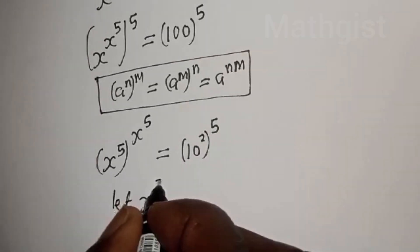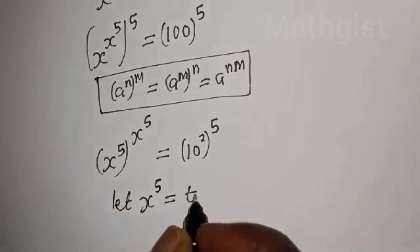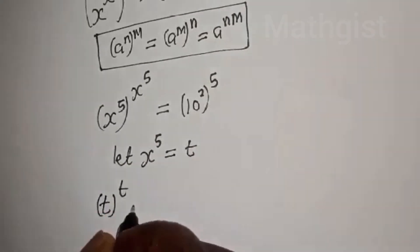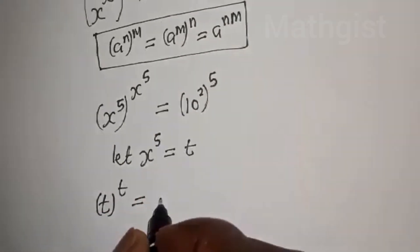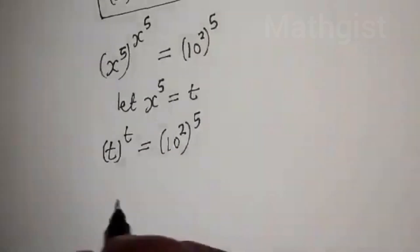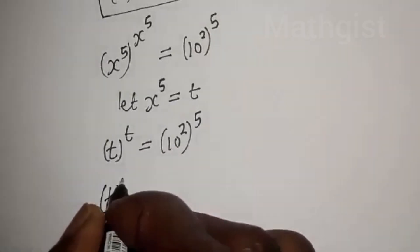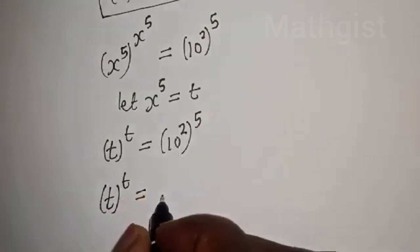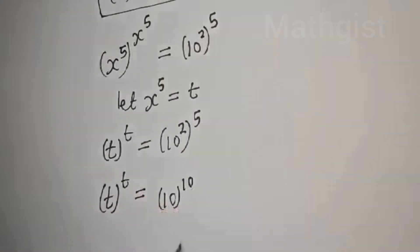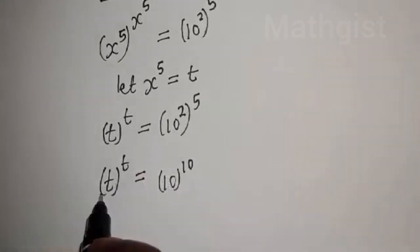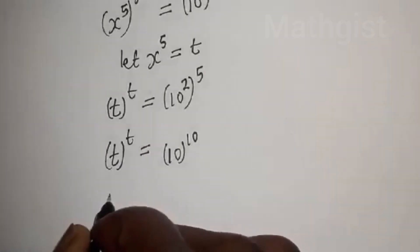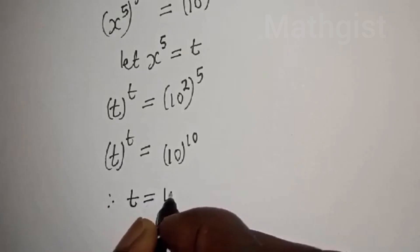Let s raised to power 5 equal t. Then t raised to power t is equal to 10 squared to the power of 5. This can be written as 10 raised to power 2 times 5, that is 10 to the power 10. Since the base equals 10 and the exponent equals 10, therefore t is equal to 10.